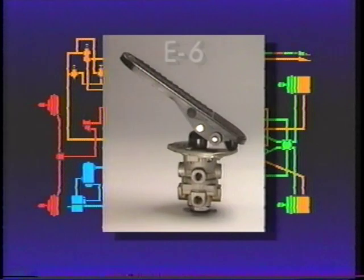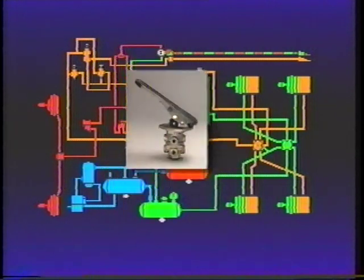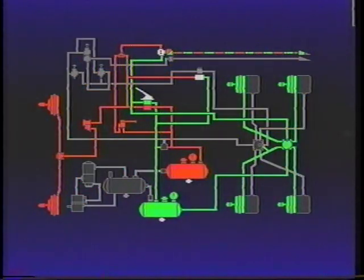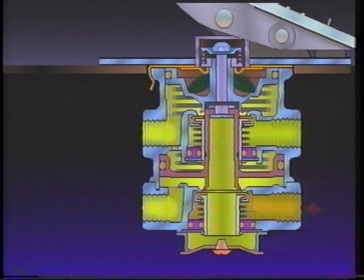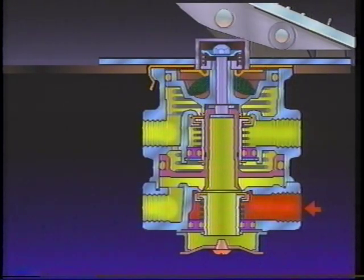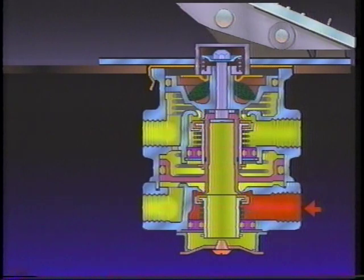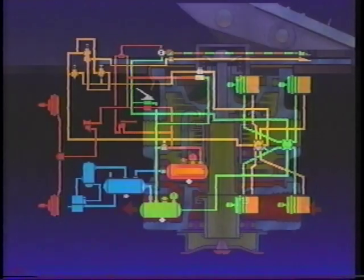The E6 is two separate brake valves in a single housing operated by a single treadle. It receives air from two separate reservoirs in the system's primary and secondary circuits. The E6 treats the circuits independently and applies or releases either the front or rear brakes regardless of failure in either.